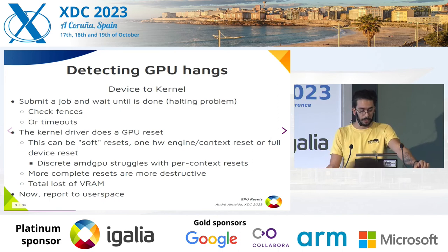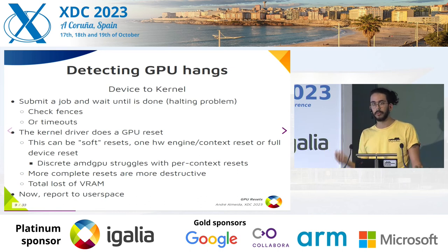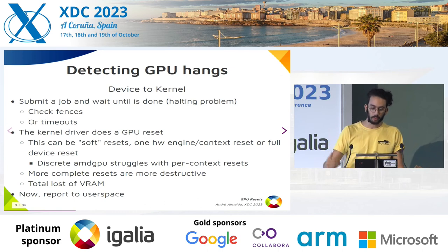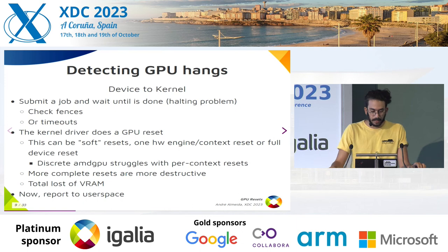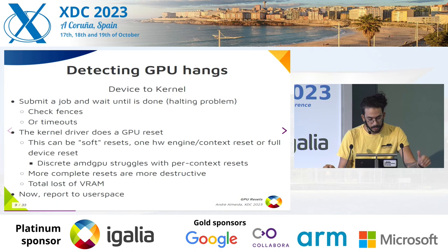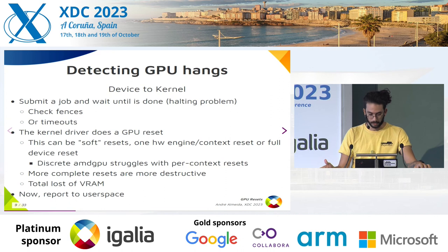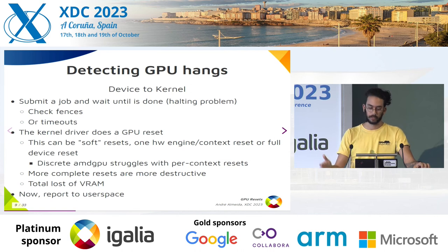This is very vendor-specific. Each hardware supports different types of resets. We have what are called soft resets that will only reset the context or the engine that has problems, and we also have full device resets. What I found is that discrete AMD GPUs struggle with per-context resets — it usually just goes for a full reset most of the time. That means a total loss of VRAM, so if your game crashes, probably GNOME or whatever compositor you're using will also crash.